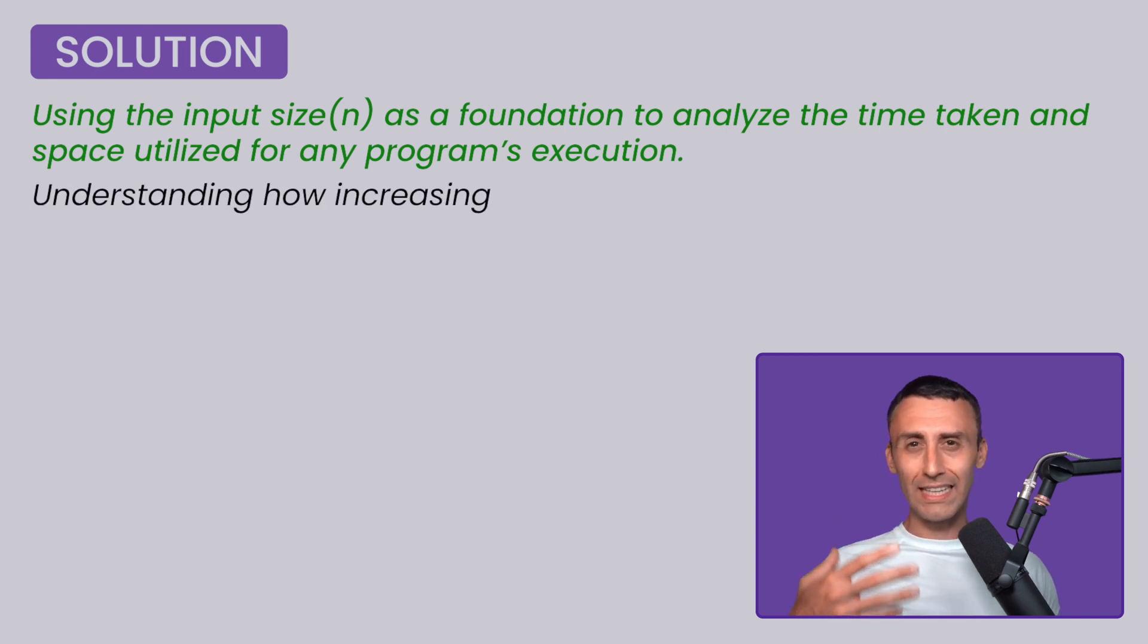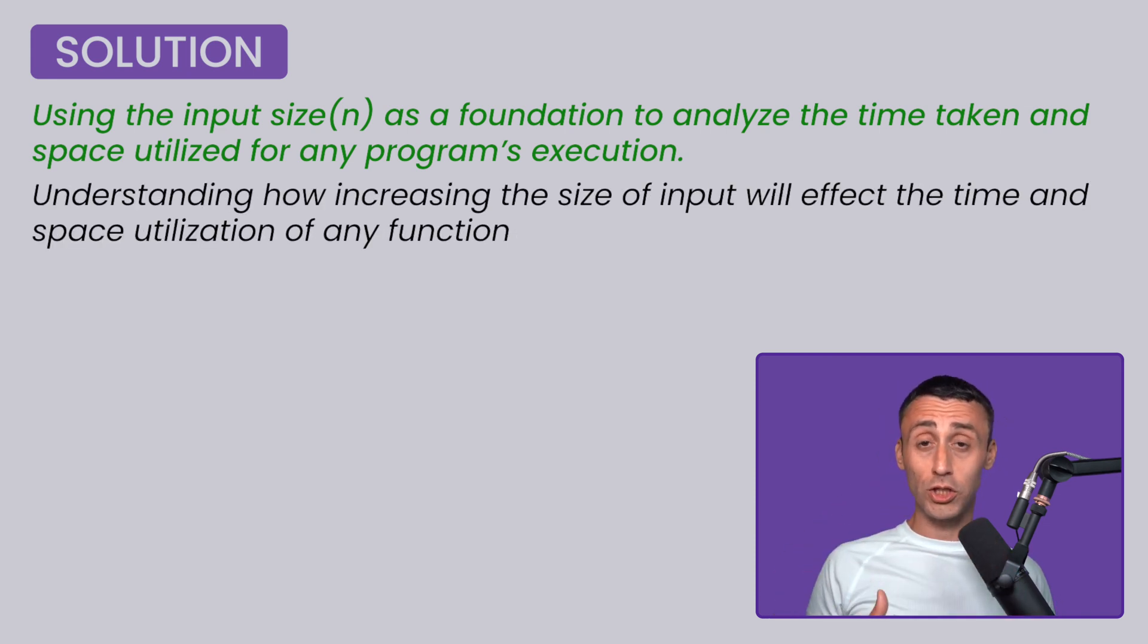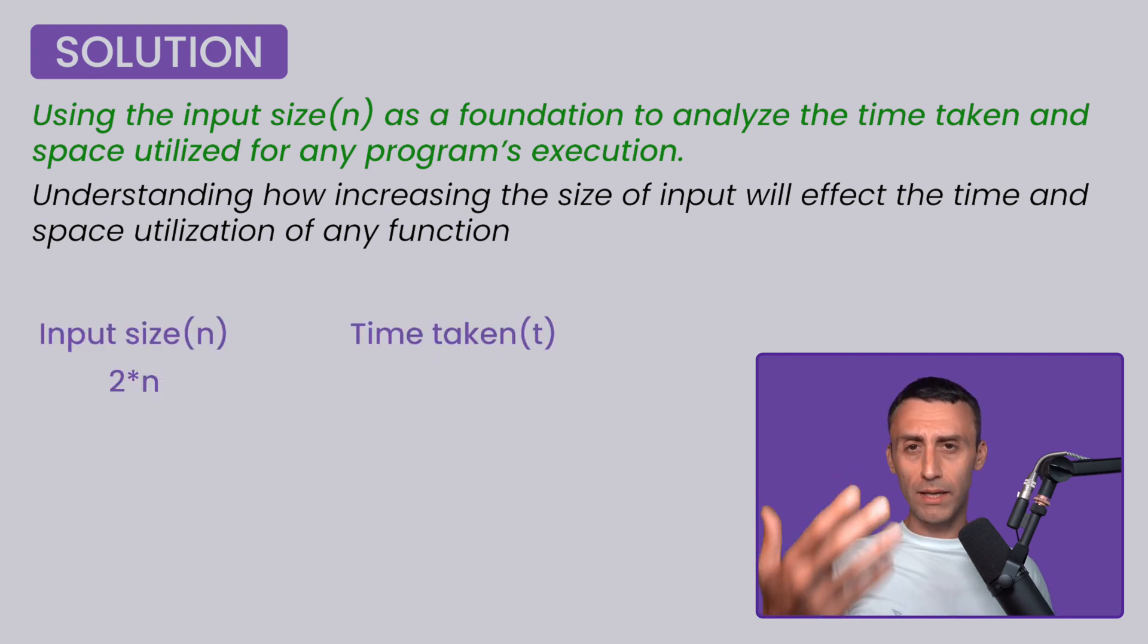What we do is understand how the time and space utilization will be affected by increasing the input size. So if we double the input size, the time utilized will also be doubled, or it will increase four times, for example. Assuming, of course, that we are running the program on the same machine. Hence, we calculate time and space complexity based on a program's input size. This gives us a great idea of how much time and space it will take to increase the input size without any dependency on the machine it's being run on.